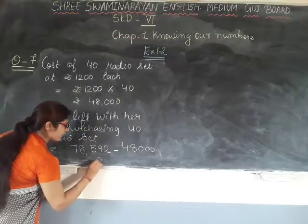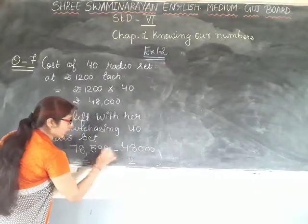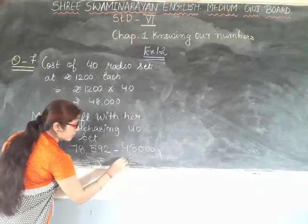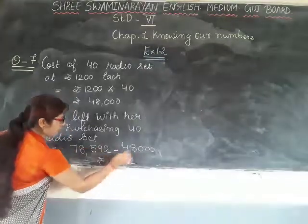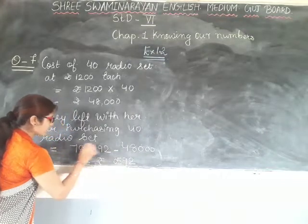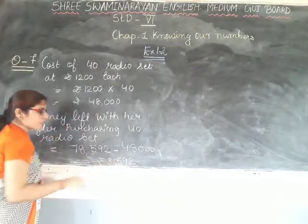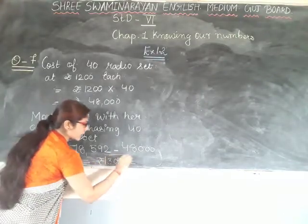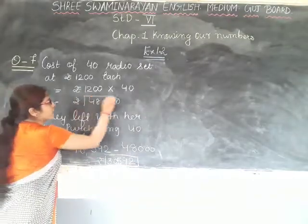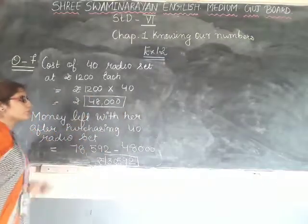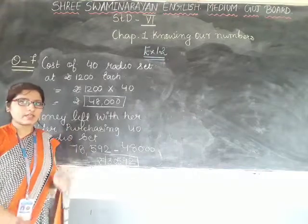How much money will be left with her? 2 minus 0 is 2, 9 minus 0 is 9, 5 minus 0 is 5, 8 minus 8 is 0, 7 minus 4 is 3. That means 30,592 rupees is left with her after purchasing 40 radio sets.